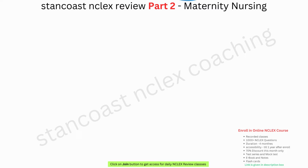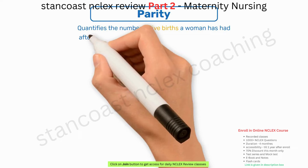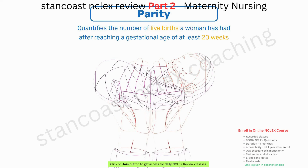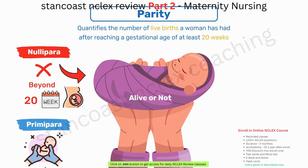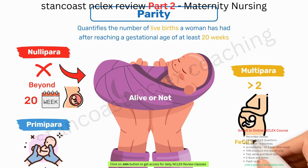Parity quantifies the number of live births a woman has had after reaching a gestational age of at least 20 weeks, regardless of whether the infant was born alive or not. A nullipara has not given birth beyond 20 weeks of gestation. A primipara has experienced one such birth, and a multipara has experienced two or more pregnancies that reach the stage of fetal viability.